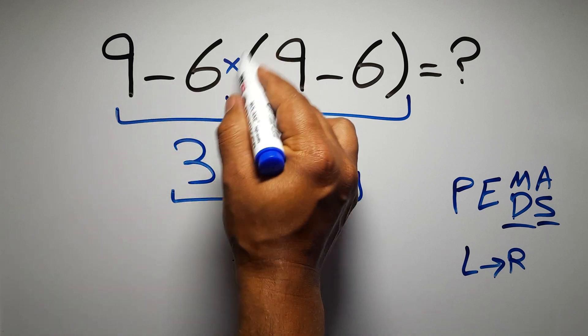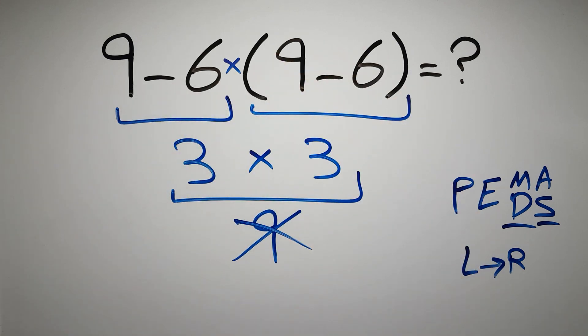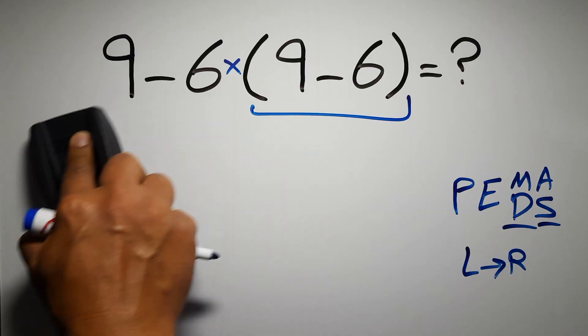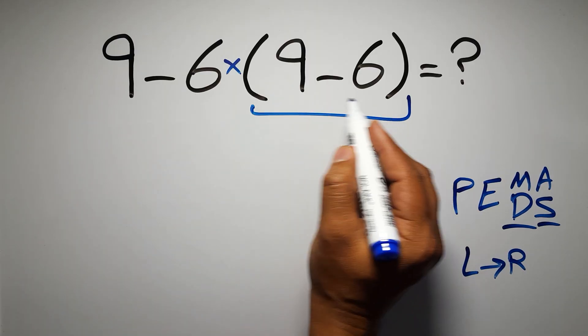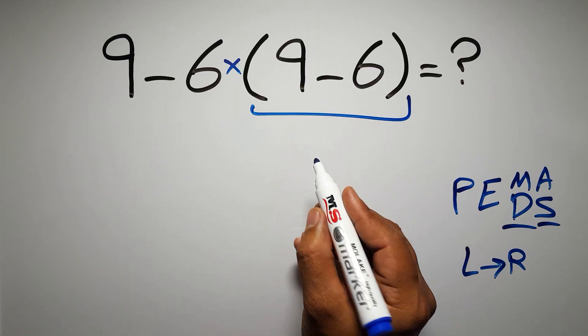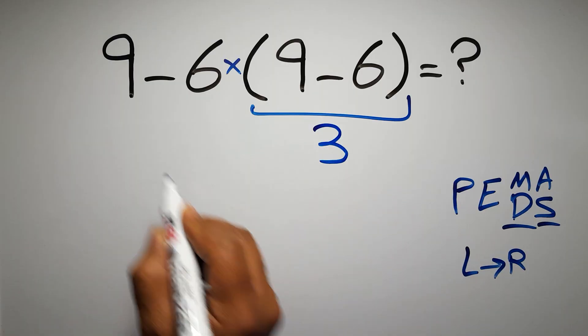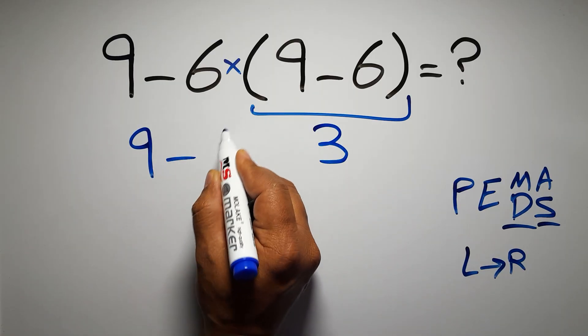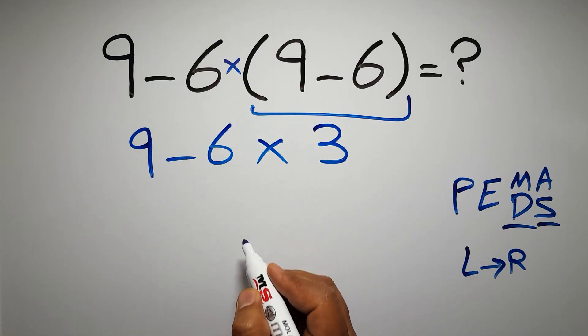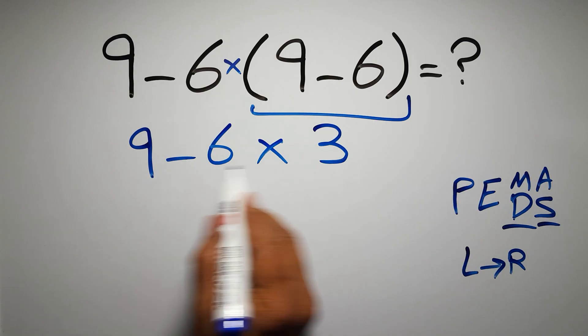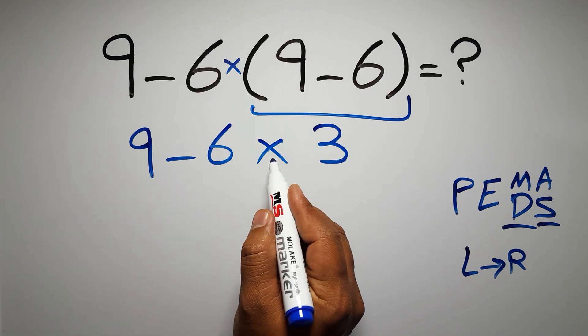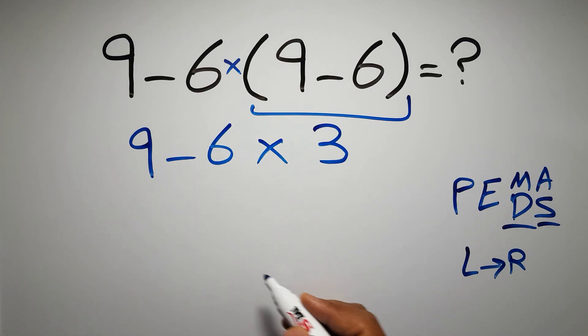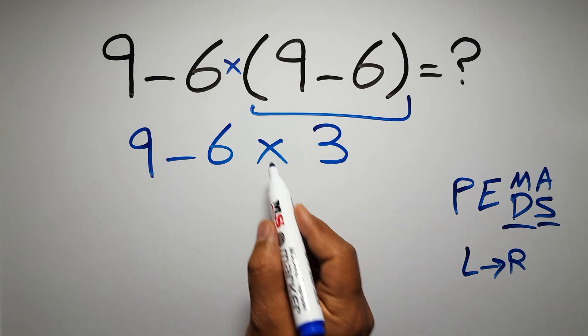So first this parentheses: 9 minus 6 gives us 3, so we have 9 minus 6 times 3. In this expression we have one subtraction and one multiplication. According to PEMDAS, multiplication has higher priority than subtraction.